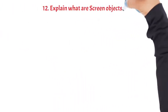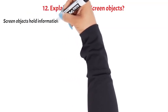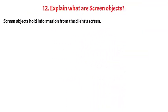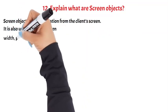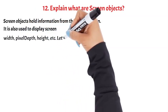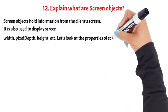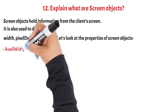Explain what are screen objects. Screen objects hold information from the client's screen. It is used to display screen width, pixel depth, height, etc. Let's look at the properties of screen objects: availWidth - provides the width of the client's screen.